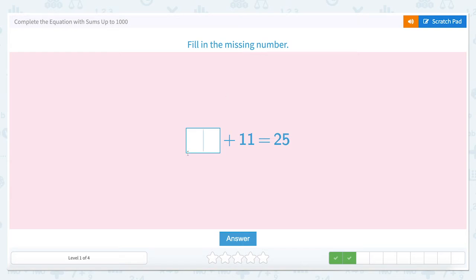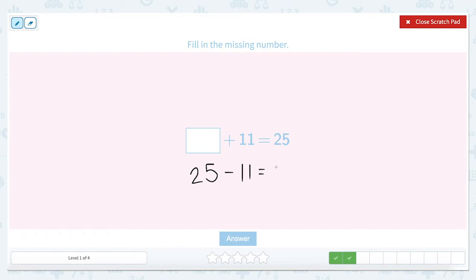Fill in the missing number. Something plus 11 equals 25. So our numbers got a little bit larger on this one. But we can still apply the same concept. Let's rewrite our addition sentence as a subtraction sentence. 25 minus 11 equals something. So let's start in our ones place. 5 ones minus 1, 1 is 4 ones. 2 tens minus 1, 10 gives us 1, 10.